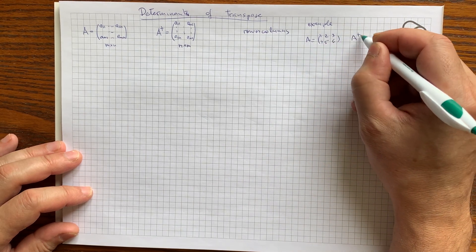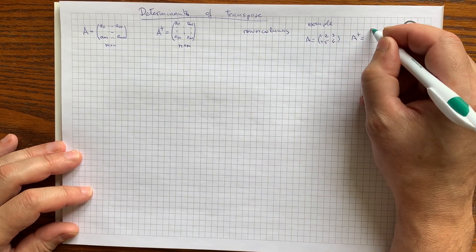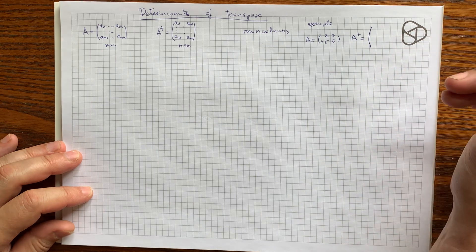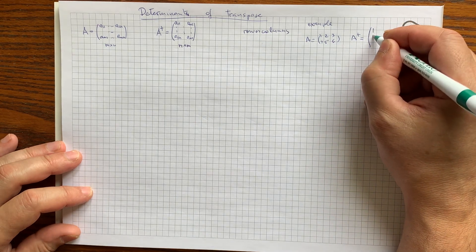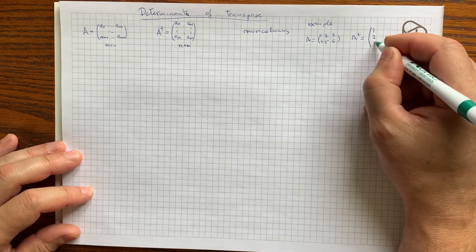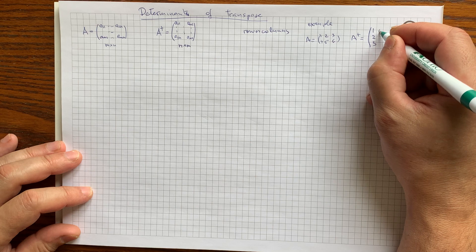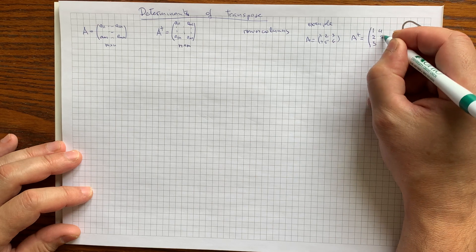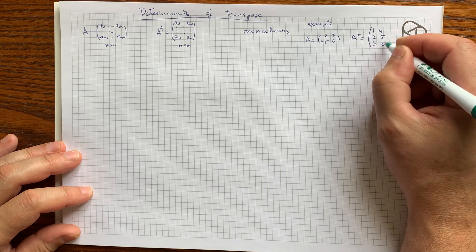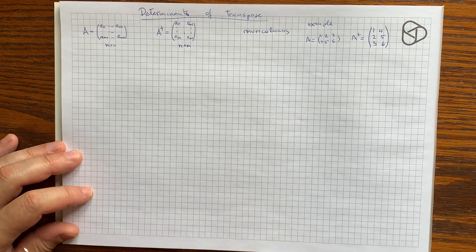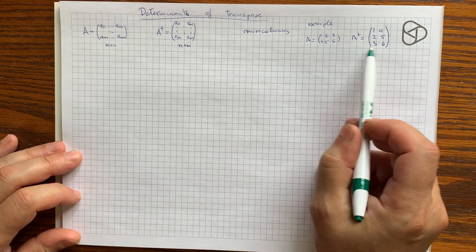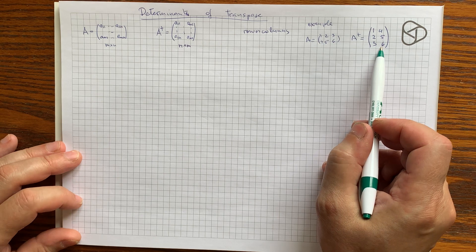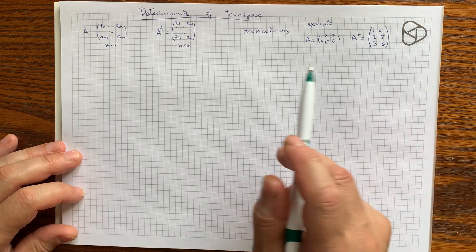Its transpose will be 3 by 2. The first column will be the first row of the original, and the second column will be the second row. So that is the transpose of A.